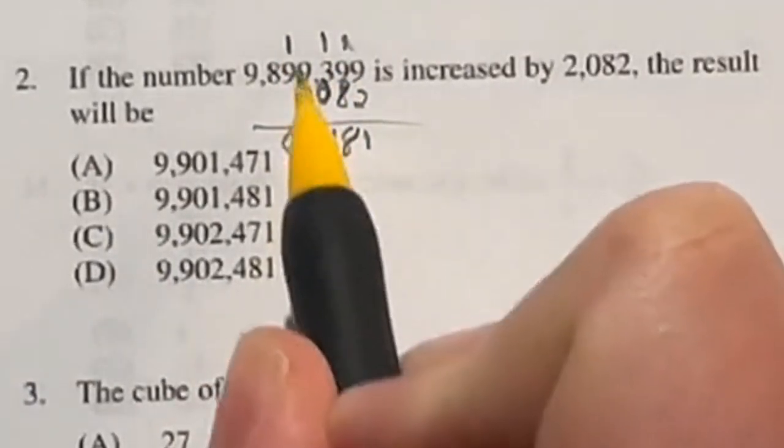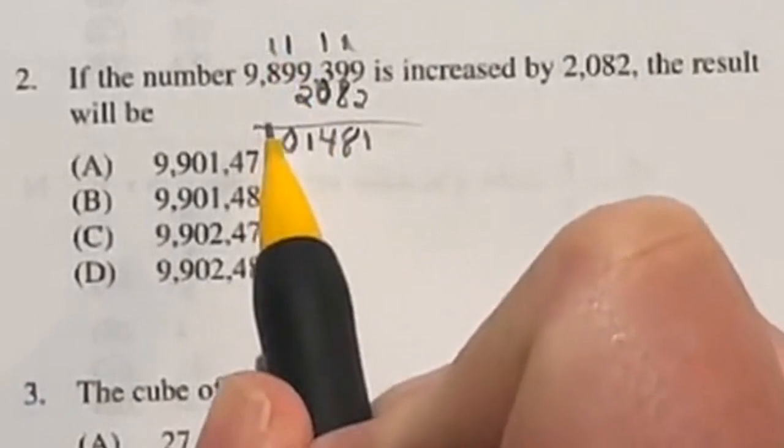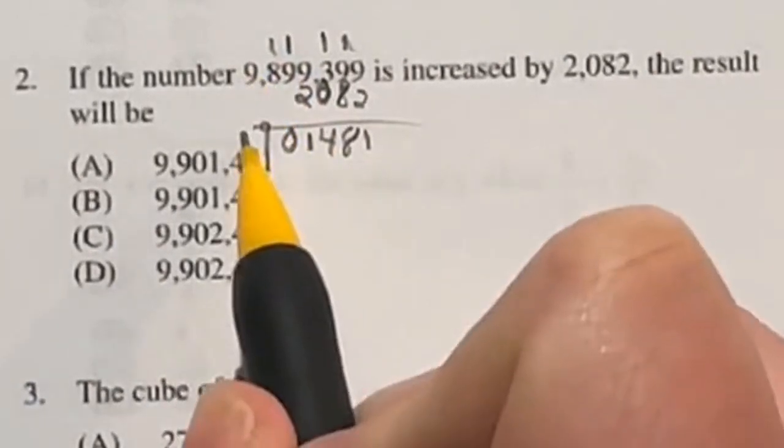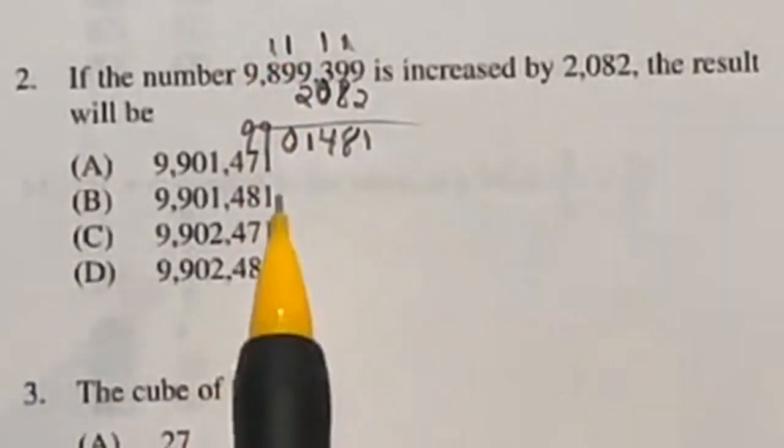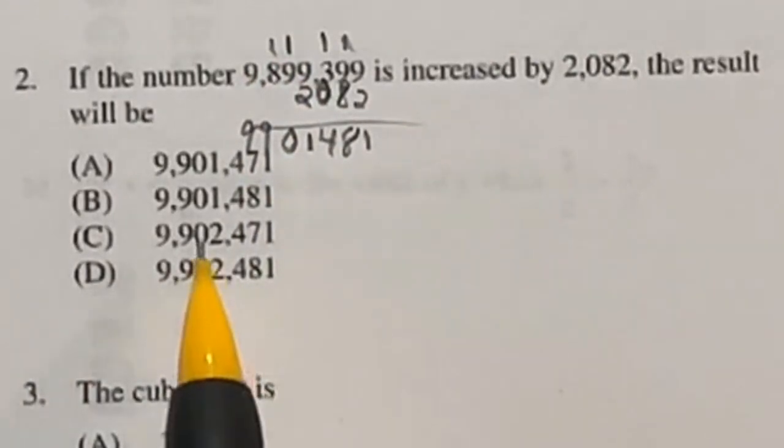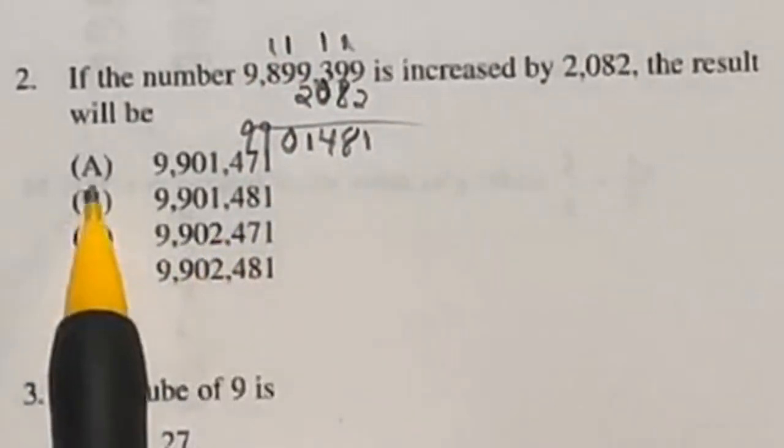And then from there, we're just going to keep carrying 9. Carry the 1. That's going to give me 9. And then we got a 9 right here. So this should be our final answer right here. When I look through all of our options, it looks like that's going to be answer B.